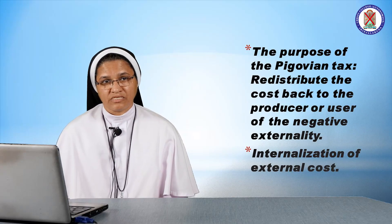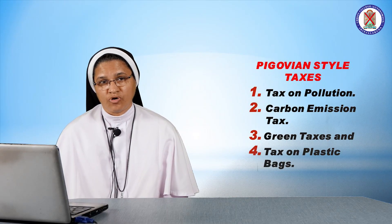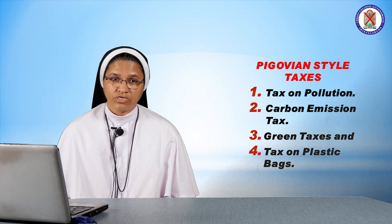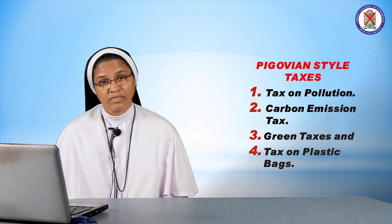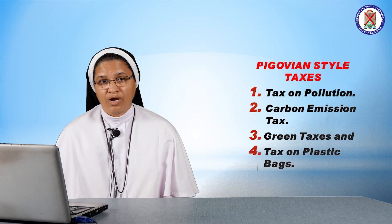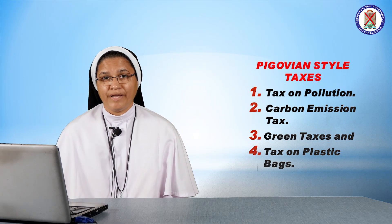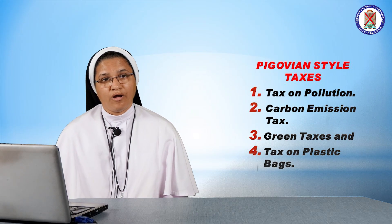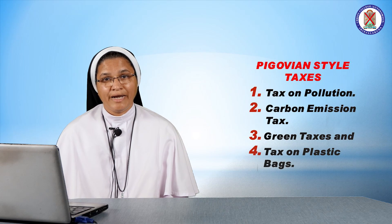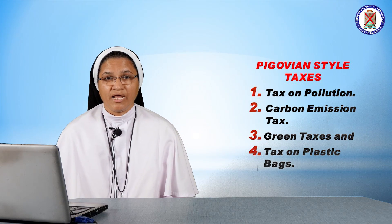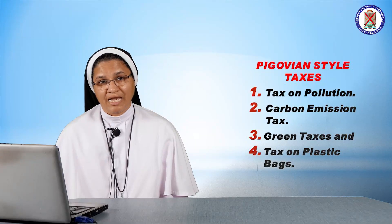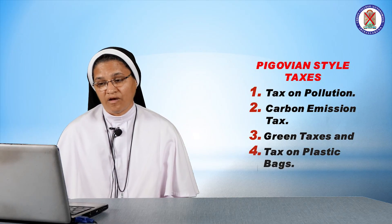Let us see some Pigouvian-style taxes. First, tax on pollution. Pollution from a factory creates a negative externality because people nearby bear the cost of pollution. The polluter considers only private costs, not the external costs. Tax on pollution provides a clear incentive to polluters to reduce emissions and seek out cleaner and sustainable alternatives. According to a WHO report, Delhi is the most polluted city in India, based on various parameters such as levels of nitrogen oxide and sulphur dioxide.